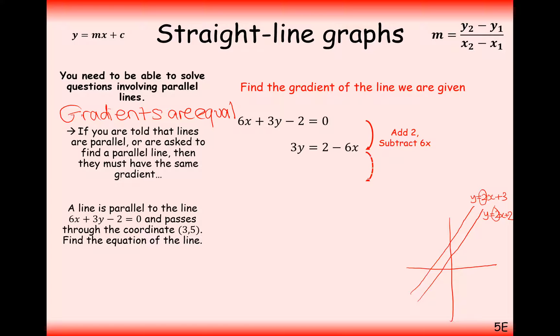Add the 2 and take away the 6x. Divide through by the 3 and you get 2 thirds minus 2x. Now, I've written it the other way around here. The gradient here is always the value in front of x. So the gradient here is negative 2.